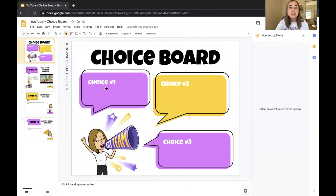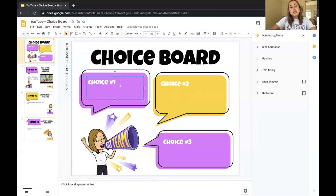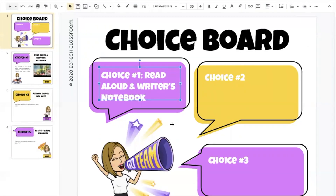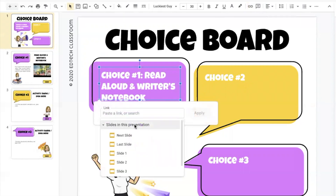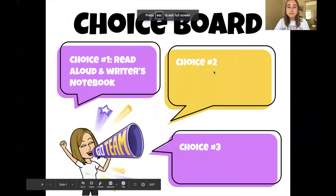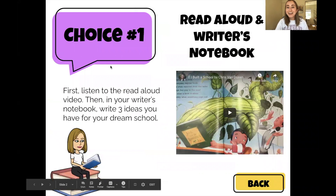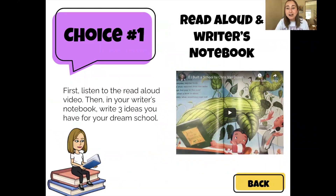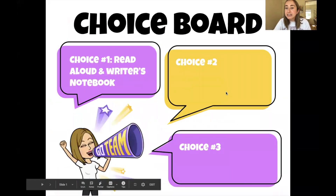I'll also want to do the reverse — have students click on the choice text box on the homepage and have it take them to that activity slide. On the homepage, I'll click the choice number one text box, hit the link button, go to "Slides in this presentation," and select slide two. Click Apply. Now when the slides are in presenter view and a student clicks choice number one, it takes them directly to that activity page. When they're done, they can click back and choose another activity.